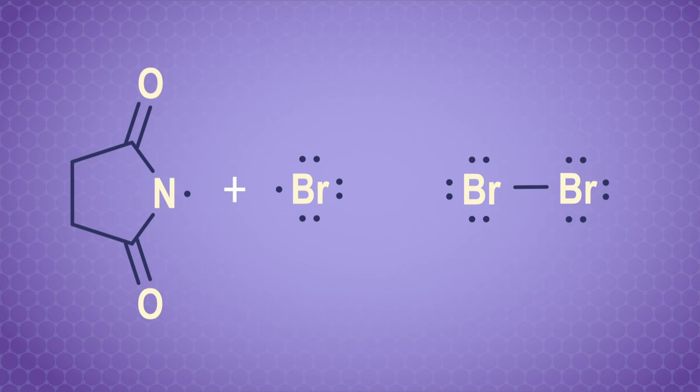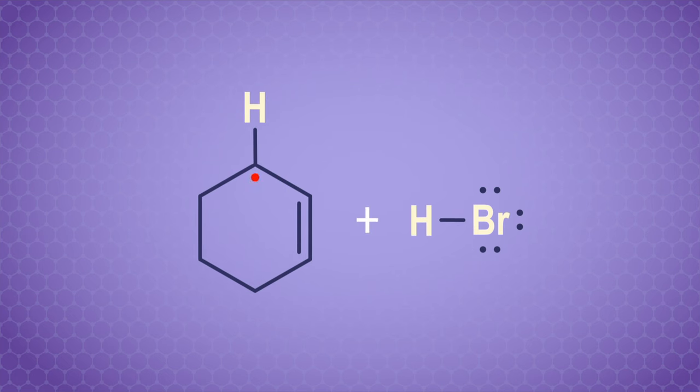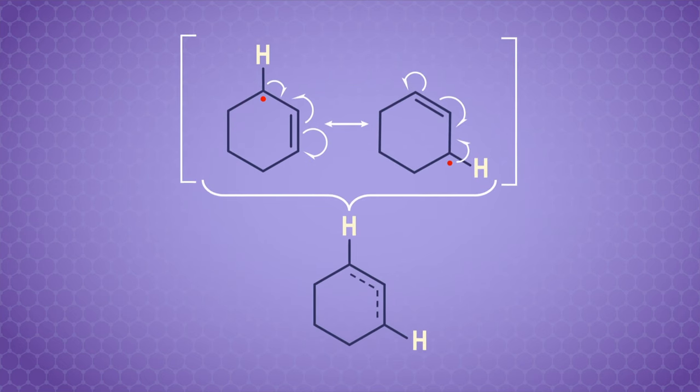An energetic bromine radical is irresistible to an allylic hydrogen electron on cyclohexene, so the stage is set for propagation. HBr is formed, and an allyl radical is left on the alkene. Basically, allylic hydrogens are so ready to party because this allyl radical is in a p-orbital and is stabilized by resonance with a double bond.